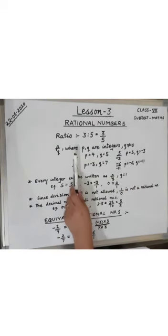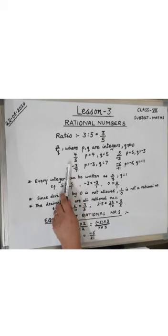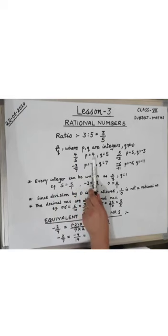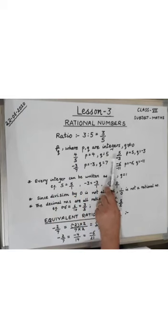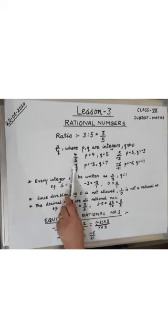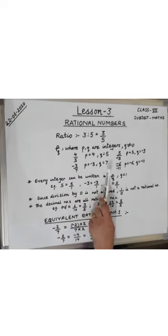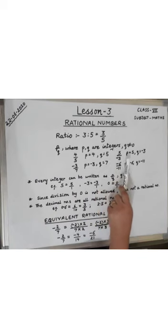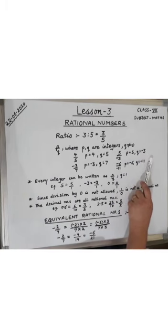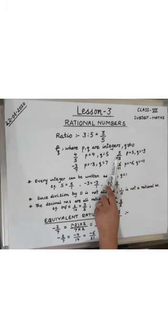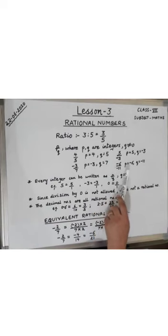For example, 4 upon 5 is a rational number where P is 4 and Q equals 5. In the same way, minus 3 upon 7 is also a rational number — minus 3 and 7 are both integers, with P equals minus 3 and Q equals 7. Similarly, 5 upon minus 3 is a rational number with P equals 5 and Q equals minus 3, and minus 6 upon minus 11 is also an example of a rational number.